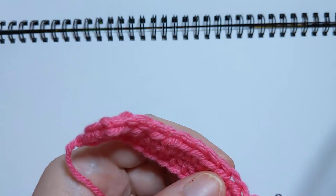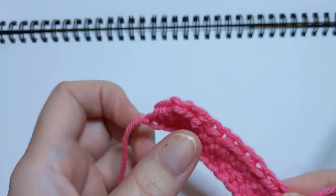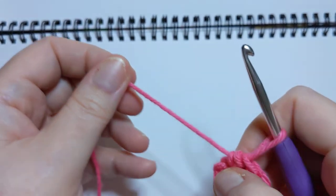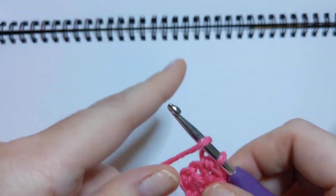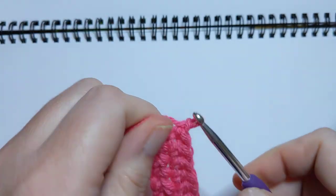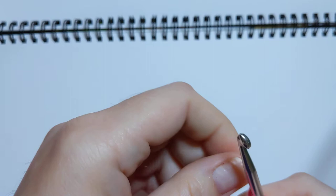Where we had 12 before, because we crocheted two together right here. Now this is very important for decreasing, which there are a lot of projects you have to decrease in. Let's snug this back up.